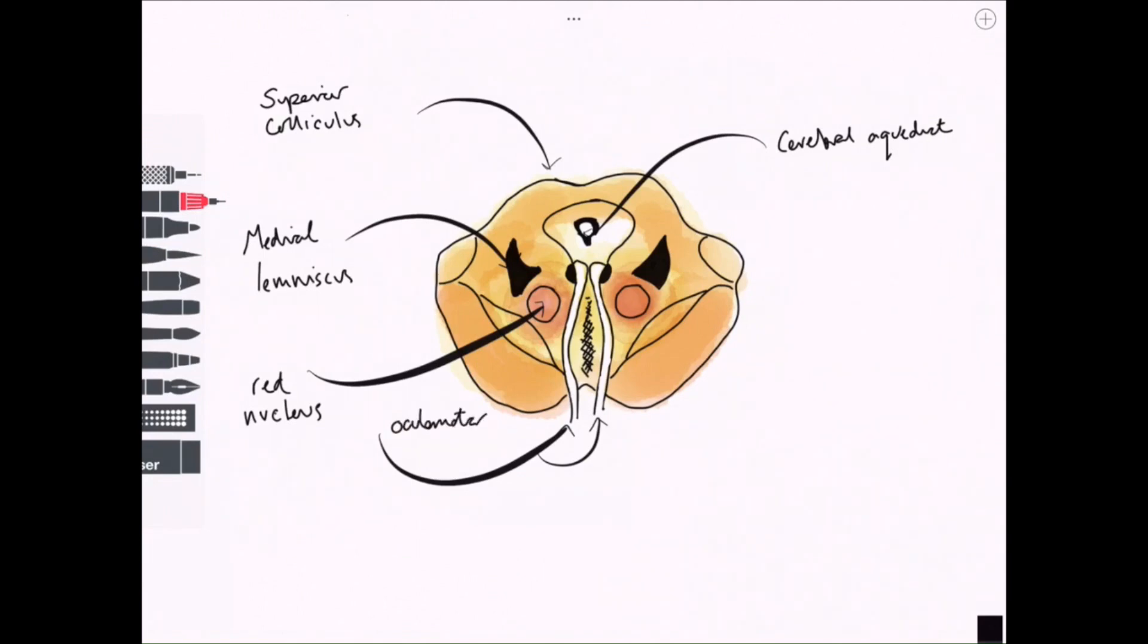And anteriorly, we have the emergence of the oculomotor nerve coming out on the left and right sides there. We also have a very important region known as the substantia nigra, important in connections with the striatum. Dopaminergic neurons would feed in to the striatum, the caudate nucleus and the putamen.